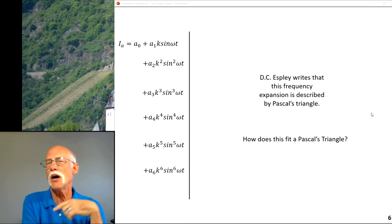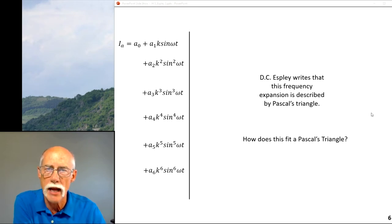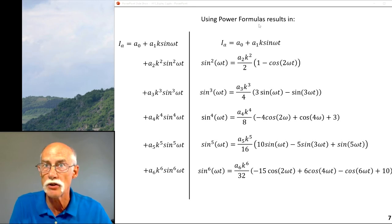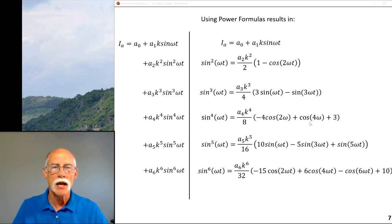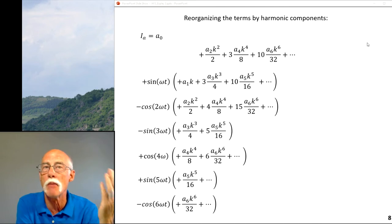We're going to take a shortcut here because he says this led him to the Pascal triangle. I'm sure the first time he worked it out it wasn't that intuitively obvious. So what we're going to do is cheat a little bit using power formulas. We substitute the power formulas for each of these terms and this is what we're going to get here on the right. So that part's done. This is as far as he takes it except that he reorganizes the terms. He says let's reorganize the terms by harmonic components.